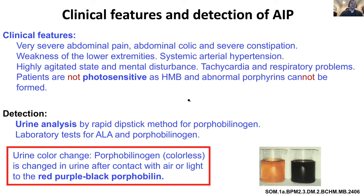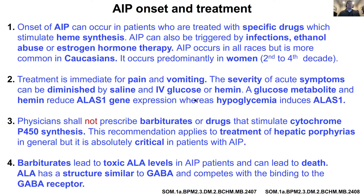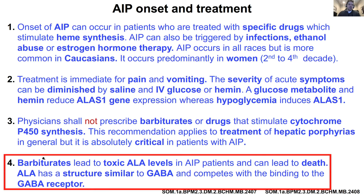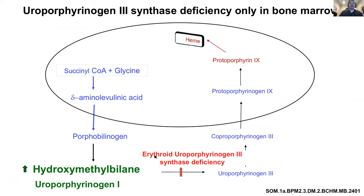An important point: barbiturates are anti-anxiety medications. ALA has a structure very similar to GABA, and barbiturates work on the GABA receptor. You cannot give a person with AIP barbiturates because it's very toxic to them - the barbiturates that are supposed to bind the GABA receptor look very similar to ALA. That's the key thing to remember about AIP: avoid barbiturates.